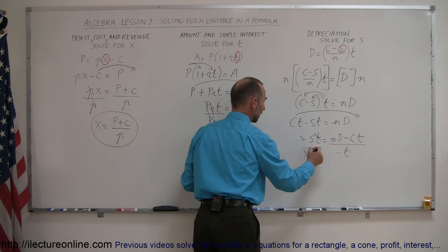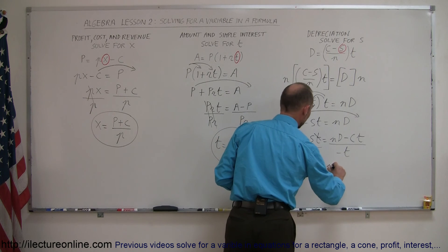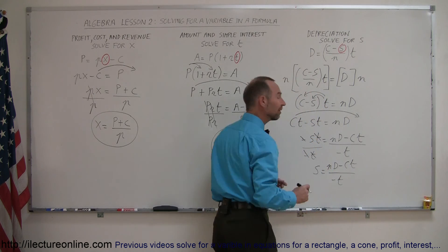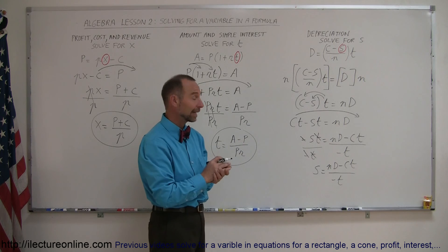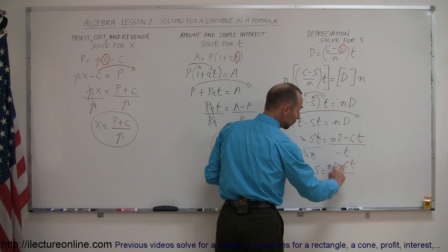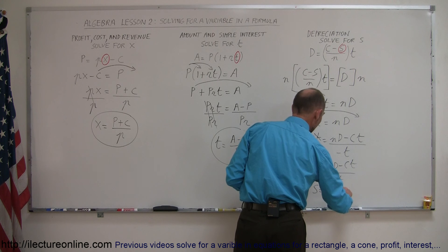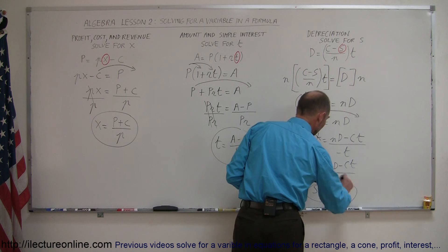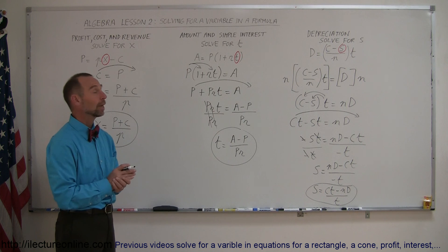The minus cancels out, the t cancels out, and we're left with s on the left side. On the right side we end up with nd minus ct over a negative t. Typically what we do when we have that extra negative is multiply the top and the bottom by negative 1 — that will get rid of the negative here and switch the signs. So we can say s is equal to a positive ct minus nd, divided by a positive t. That just looks a little bit better, not too many negative signs. There's s isolated and that's how we do that.